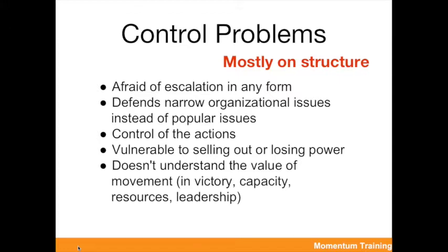The other side of the coin is what we call control problems, which mostly manifest in the structure. When large institutions want to do momentum, they get afraid of escalation in any form. They believe they have to take care of their membership, so when you're having mass arrests of 500, 1,000, 2,000 people, they think: do we have enough bond money? What if this affects our legal liabilities? And they're not thinking about active popular support — they're thinking about the fight between them and the target.